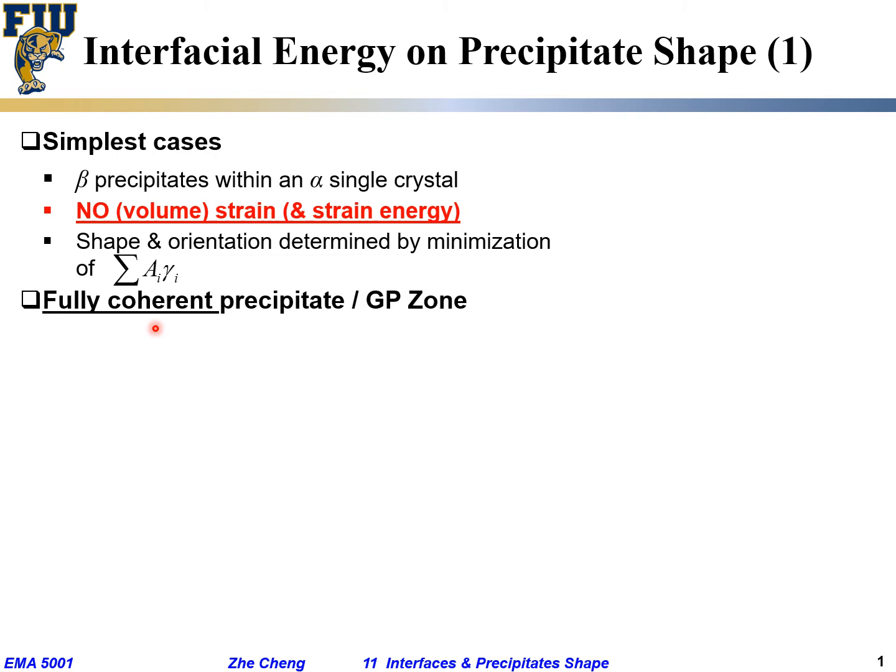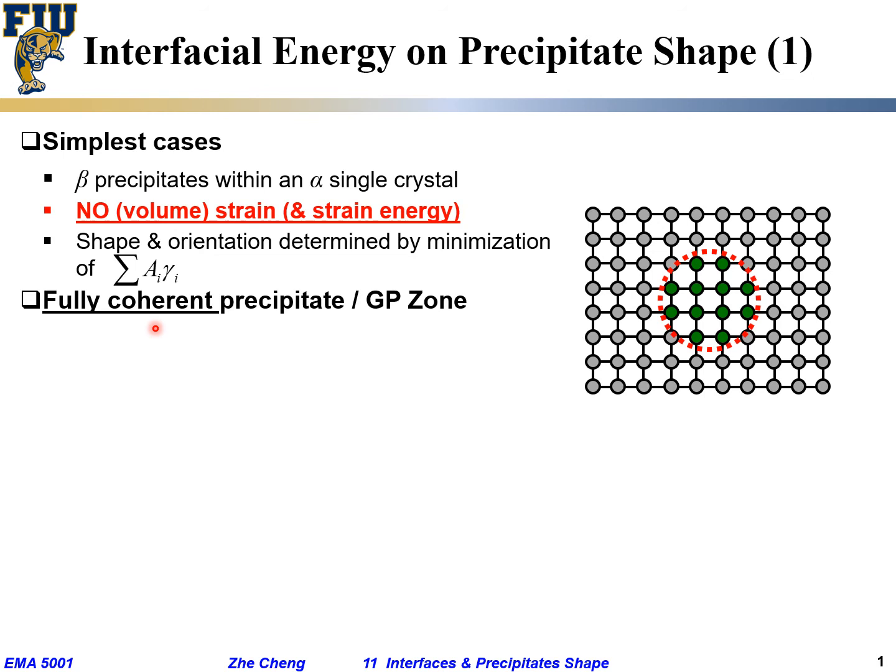And if we are talking about the fully coherent precipitate, sometimes people call it a GP zone, which I illustrate something like this: host outside, inside so-called precipitate, perfect match of...